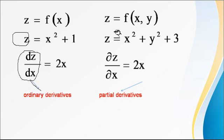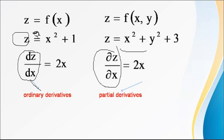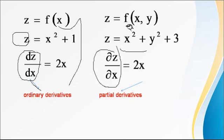See one more example. Here z is a function of x and y. For example, z equals x squared plus y squared plus 3. Now, differentiating z with respect to x, the derivative of x squared is 2x. But instead of d, we use the notation dou (∂), so it is written as ∂z by ∂x. This is called a partial derivative. Whenever a function depends on a single independent variable, its derivative is called an ordinary derivative. When it depends on two or more independent variables, that derivative is called a partial derivative.